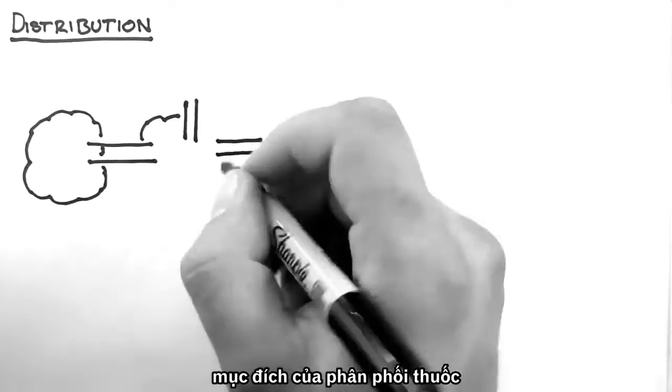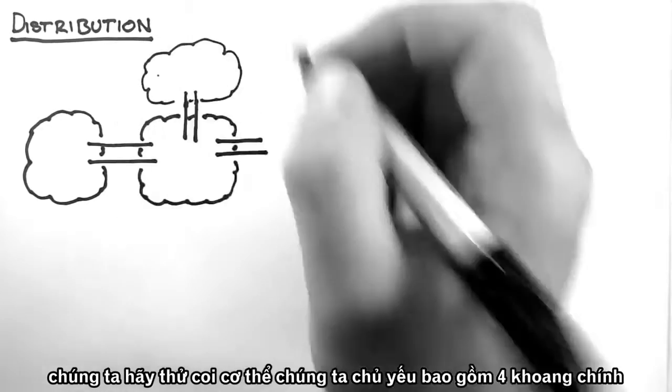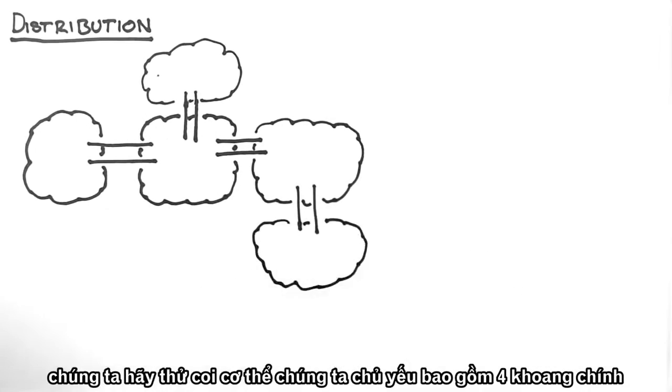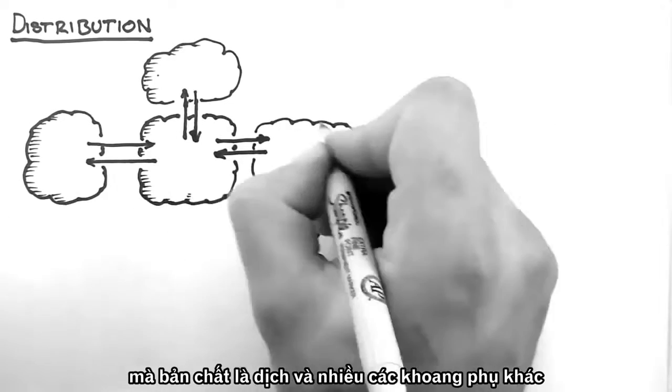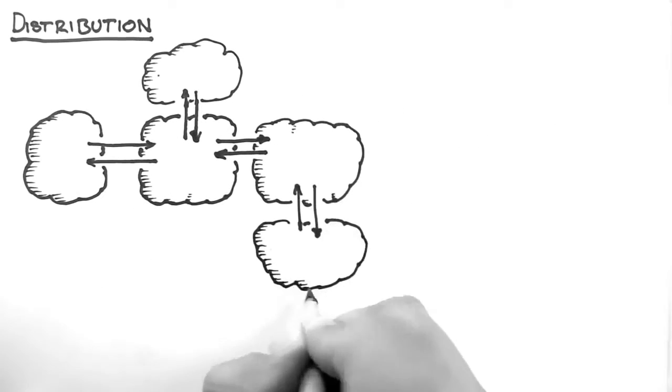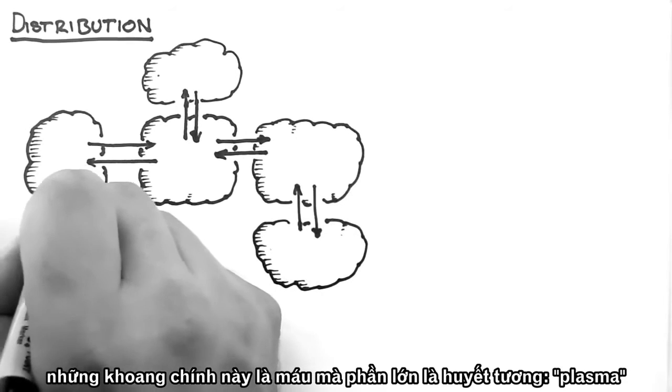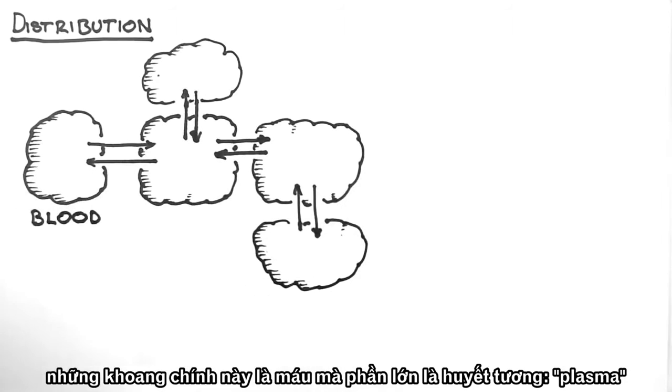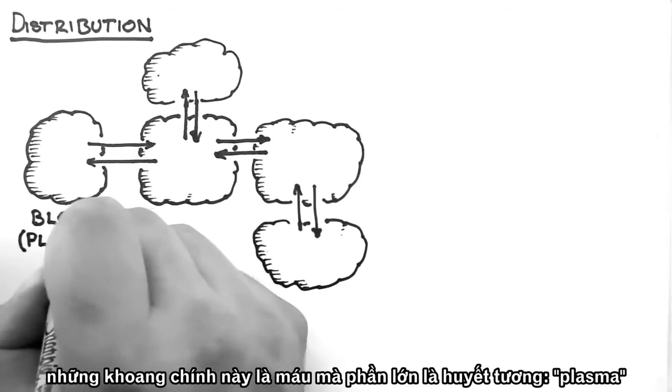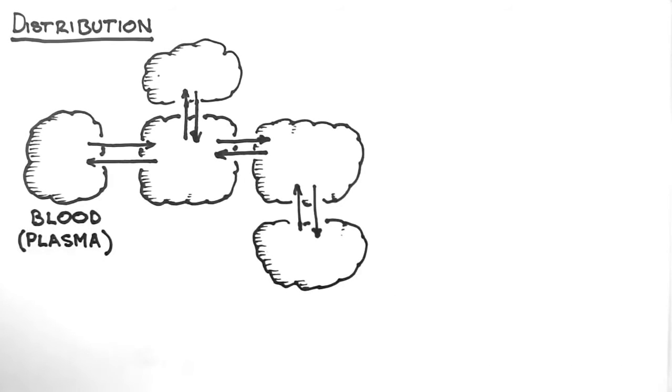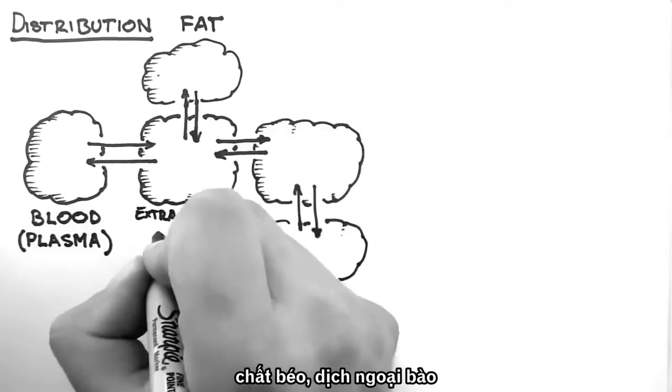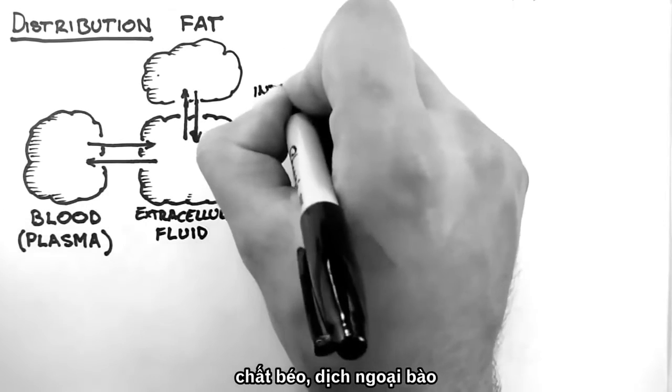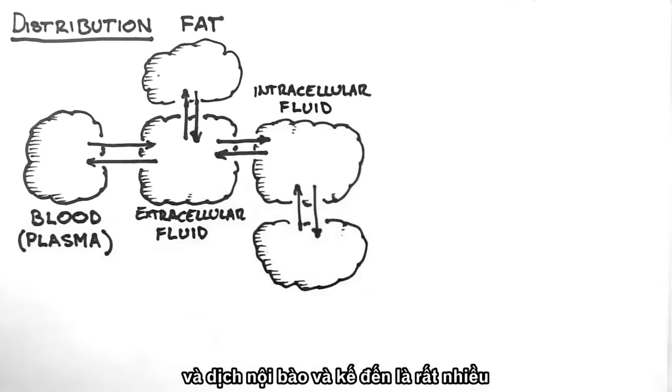For the purposes of distribution, we can consider that the body is made up of four major compartments, which are really collections of fluid, and numerous minor compartments. These major compartments are the blood, or strictly speaking the plasma, fat, extracellular fluid, and intracellular fluid.